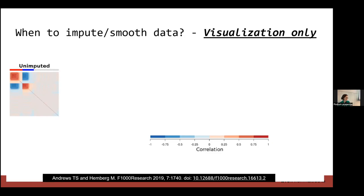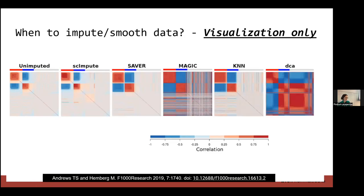Some imputation methods are worse than others. SCImpute only affects a few genes, SAVER only changes a few, but with MAGIC, all genes that aren't actually differentially expressed between cell type A and cell type B become differentially expressed between them. These tools are essentially saying this cell is similar to that other cell, therefore its gene expression should be similar, which creates signal in your data even when there's just random noise. The main argument for imputation is that it makes plots look really awesome - correlations between two genes go from 0.1 to 0.9. I recommend not using imputation.